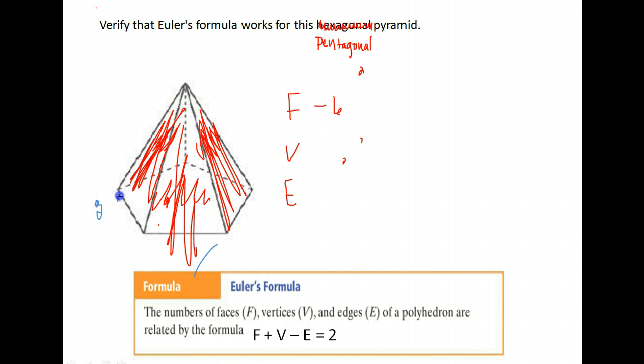Edges are the lines. So let's count the lines. There's one, two, three, four, five, six, seven, eight, nine, and one more down the back, ten. So the number of edges is ten. You want to be careful as you're counting these. It's easy to miss one.